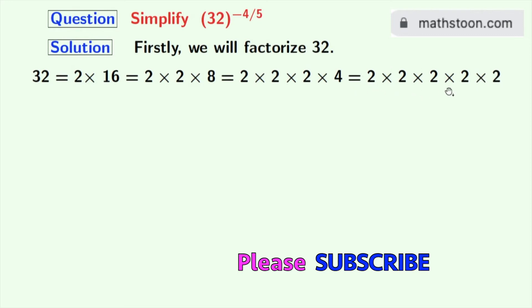Now we have the factors which are all prime numbers, so we cannot factorize further. And see that this is the product of 5 number of 2's, so we will express 32 as 2 power 5.